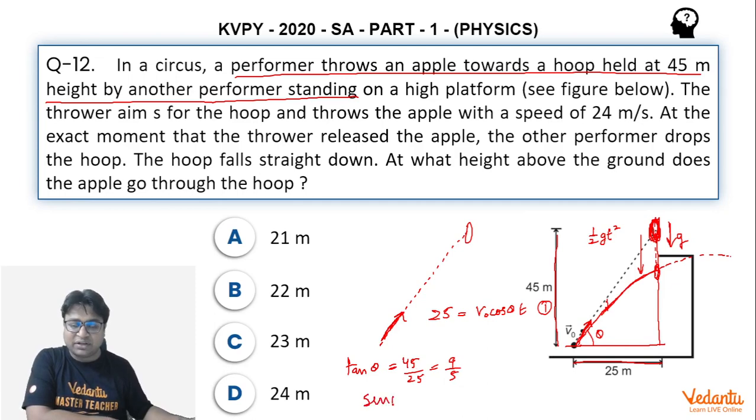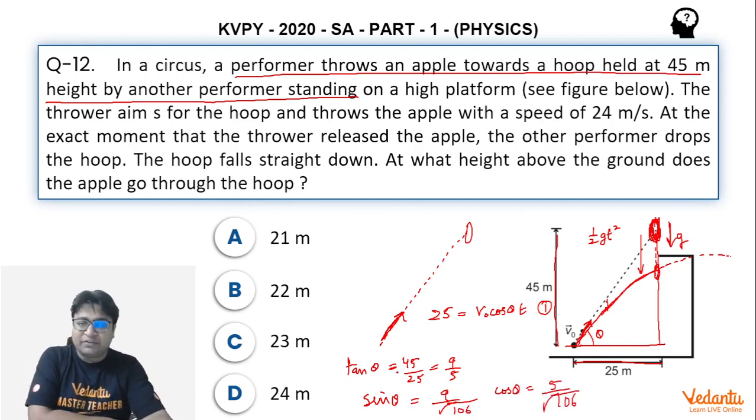Once you know the value of tan theta, you can readily calculate the value of sin theta as well - it will come out to be 9 divided by root of 106. And cos theta will come out to be 5 divided by root of 106. So we are aware of the value of sin theta, cos theta, and tan theta.